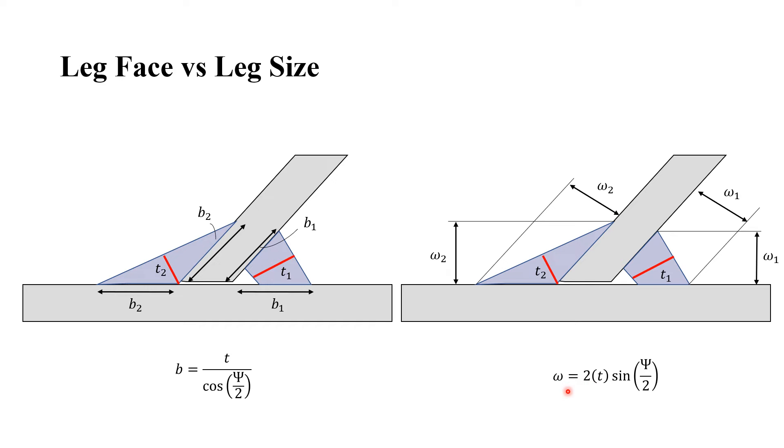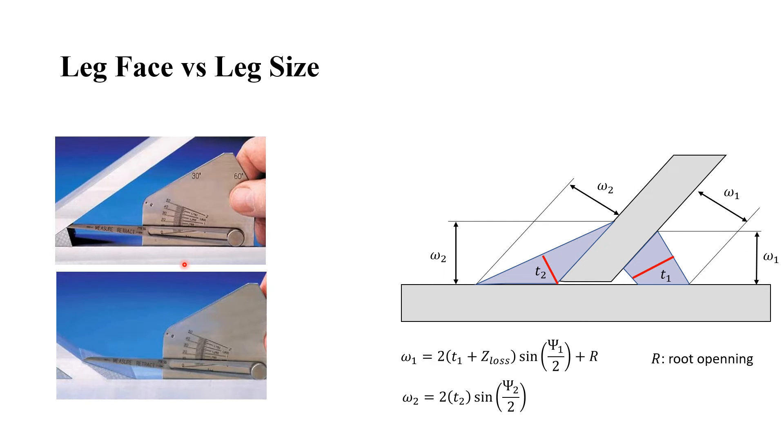And for the leg size, it equals two times the effective throat divided by sine of half the dihedral angle. The figure on the left shows the fillet weld gauge used to measure the weld size. You can see the dimension which is measured by this instrument. It would be very difficult to take the leg face and measure this dimension.